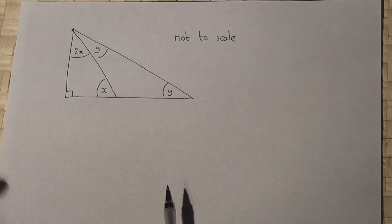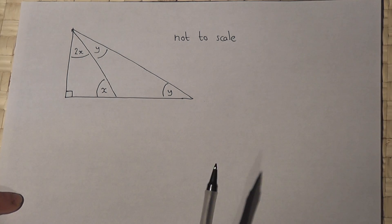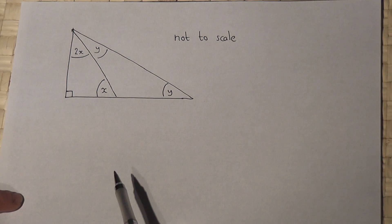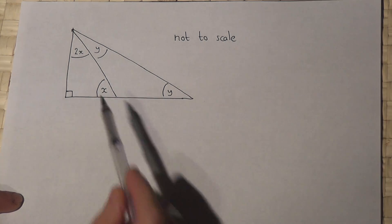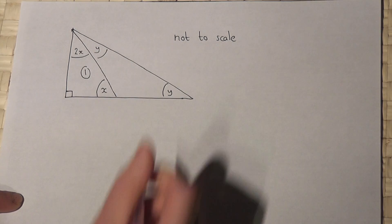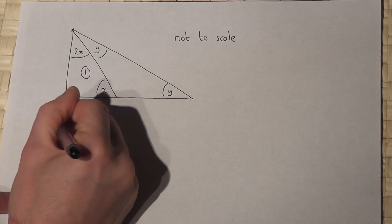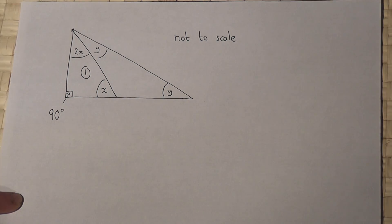This problem is a fairly routine problem involving finding missing angles in triangles. Part one just says find the size of x. If we consider triangle one here, we know this angle here is 90 degrees.